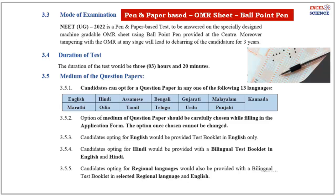Let's learn about the medium of the question papers. Question papers will be available in English, Hindi, Assamese, Bengali, Gujarati, Malayalam, Marathi, Odia, Tamil, Telugu, Urdu, Punjabi, and Kannada. Candidates opting for English will be provided a test booklet in English only. Candidates opting for Hindi will be provided a bilingual test booklet in English and Hindi. Candidates opting for regional languages will also be provided a bilingual test booklet in their selected regional language and English.